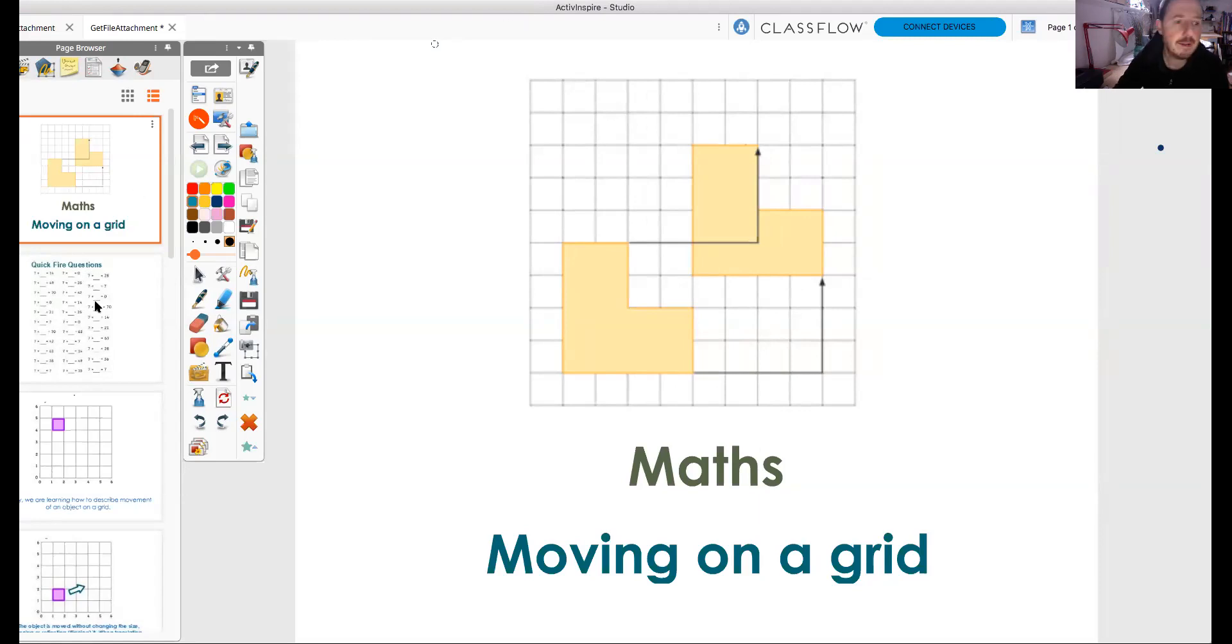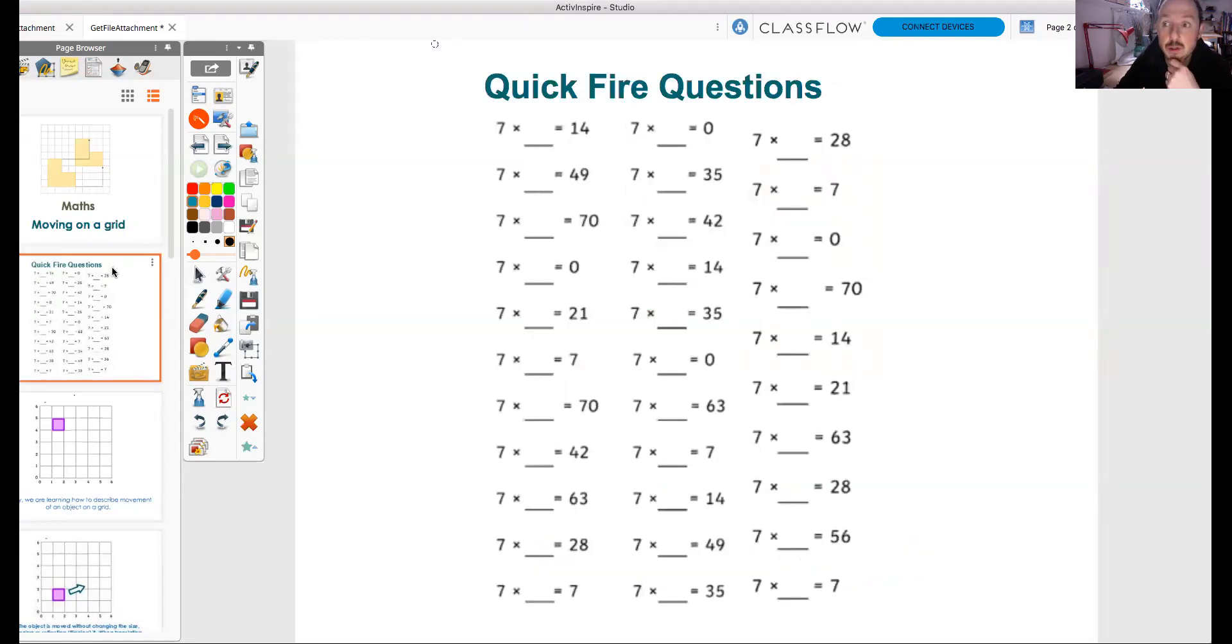So today for your Maths lesson we'll talk a little bit about moving shapes on a grid. I think the start of the Maths lesson today was to do some seven times table practice and look at all these questions, these quickfire questions that you've got to do on the sheet. Seven times something equals 14, seven times something equals zero, seven times something equals 28. So you really have to use your seven times table knowledge there to try and get through those questions as quickly as you can. It's good to practice your times tables. I do it all the time.